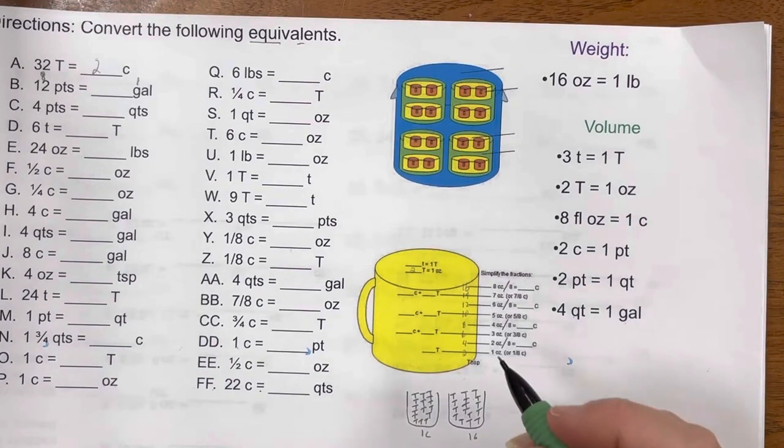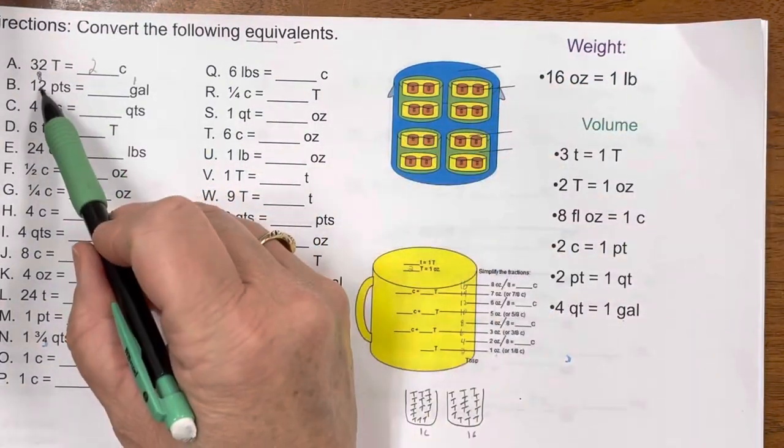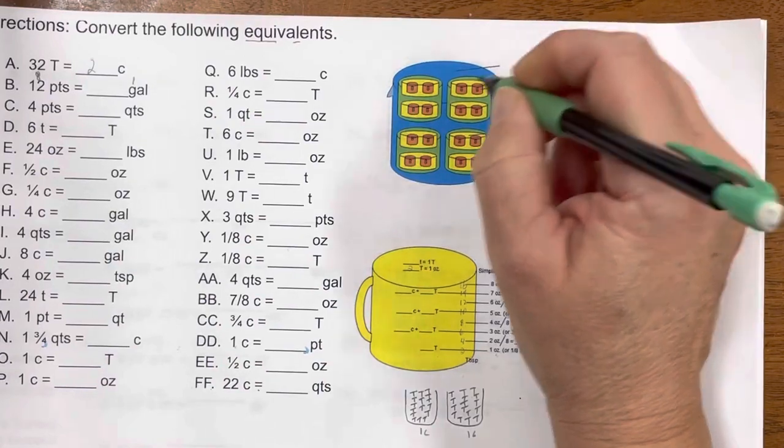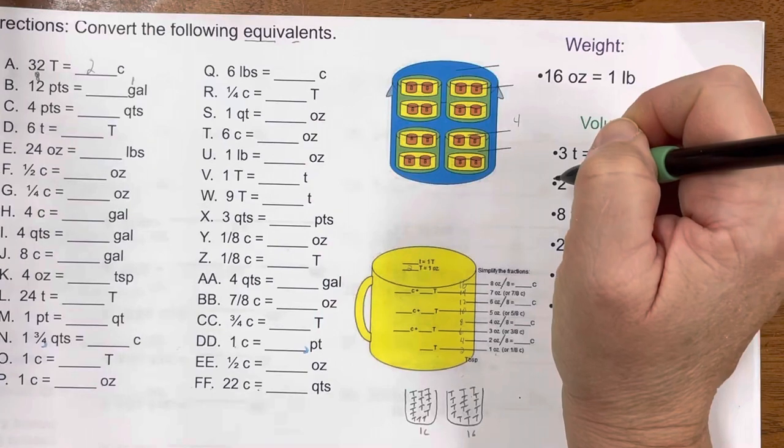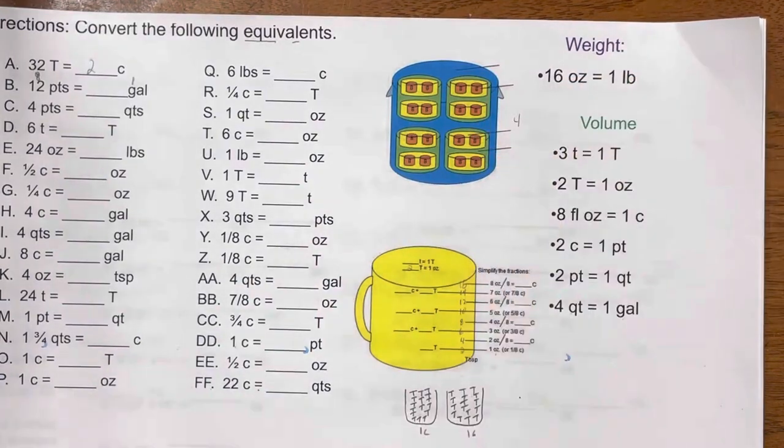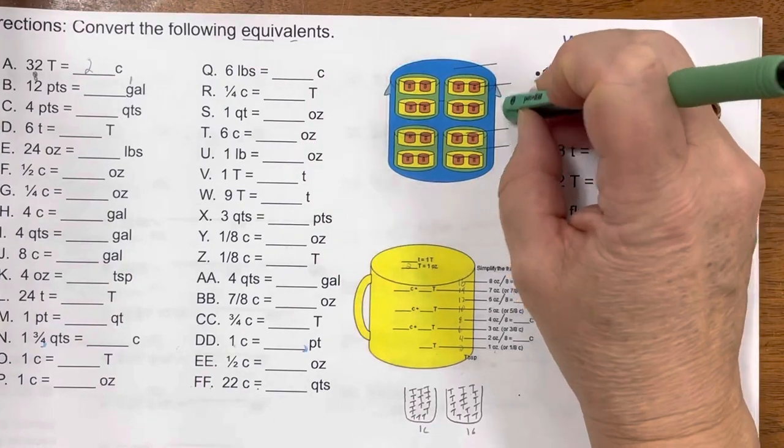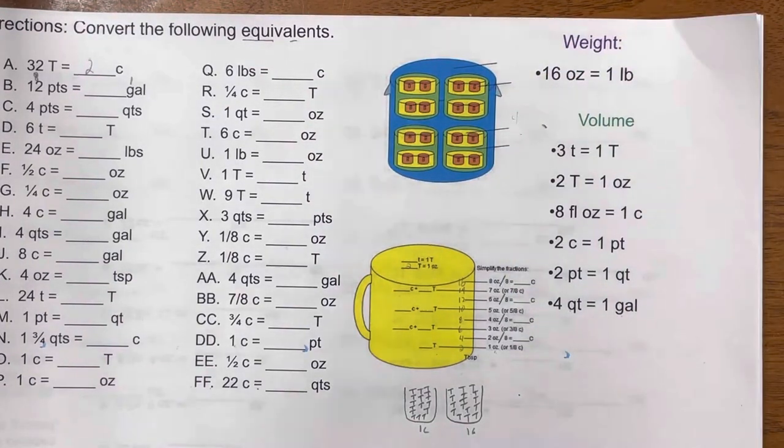But if I have 8 here, and I subtract the 8 from the 12, then I have 4 left over. And 4, we see, makes up a half of a gallon. That tells me I have one and a half gallons. That's another way to do it.